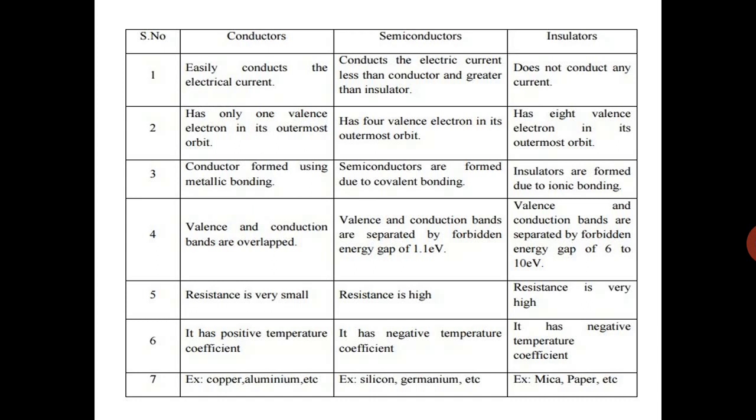Second difference is, in conductor, it has only one valence electron in its outermost orbit. In semiconductor, it has four valence electrons in its outermost orbit. And in insulator, it has eight valence electrons in its outermost orbit. This is the second difference.